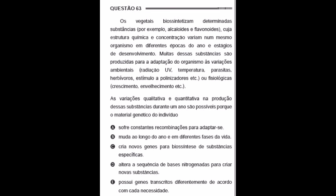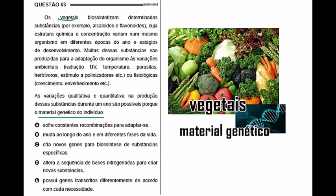The question talks about plants. Plants biosynthesize certain substances — for example, alkaloids and flavonoids — whose chemical structure and concentration vary within the same organism at different times of year and stages of development.